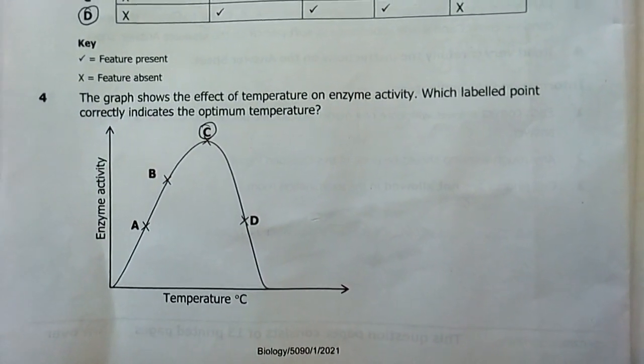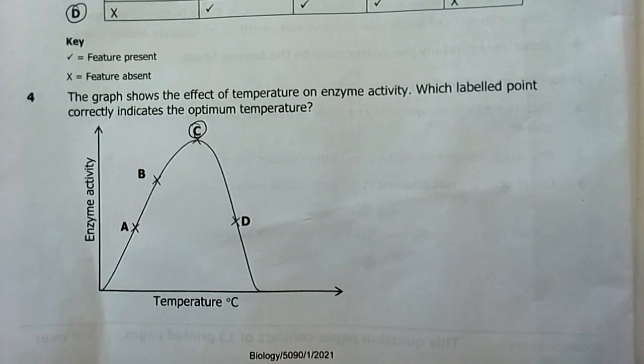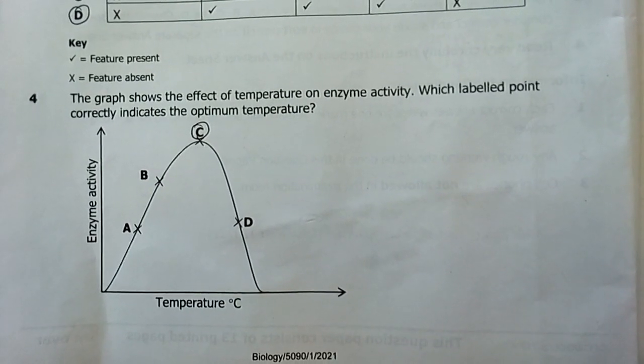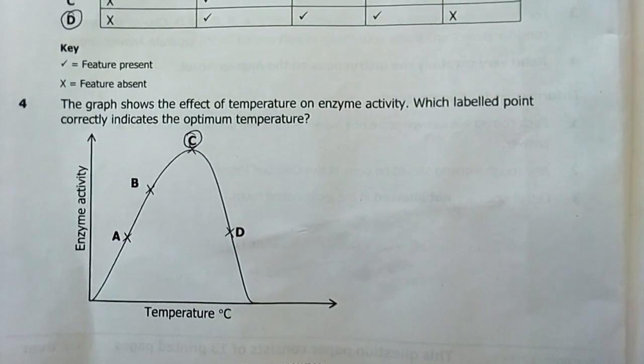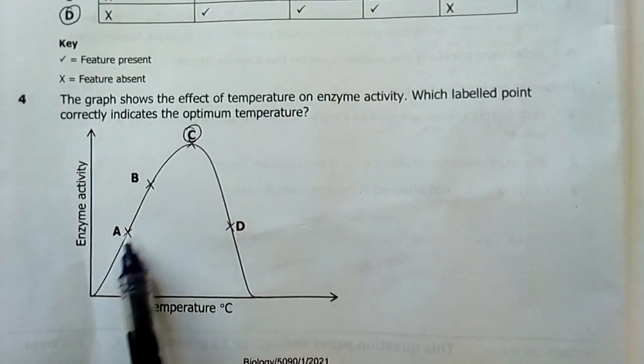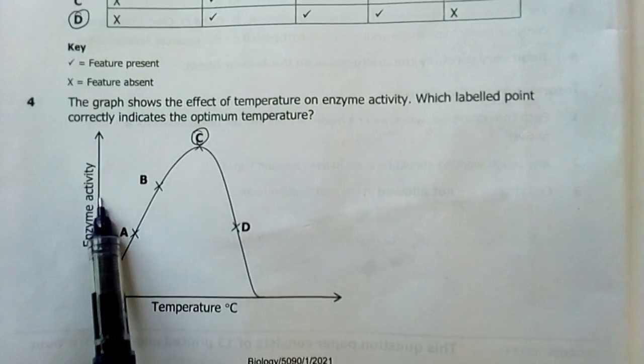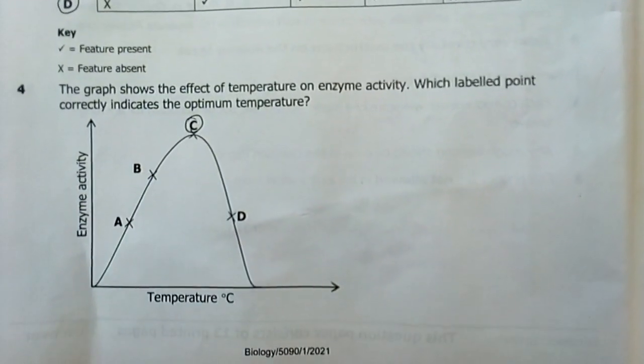The diagram shows the effect of temperature on enzyme activity. Which labelled point correctly indicates the optimum temperature? C. This is the maximum of this enzyme activity. So, C is the optimum temperature.